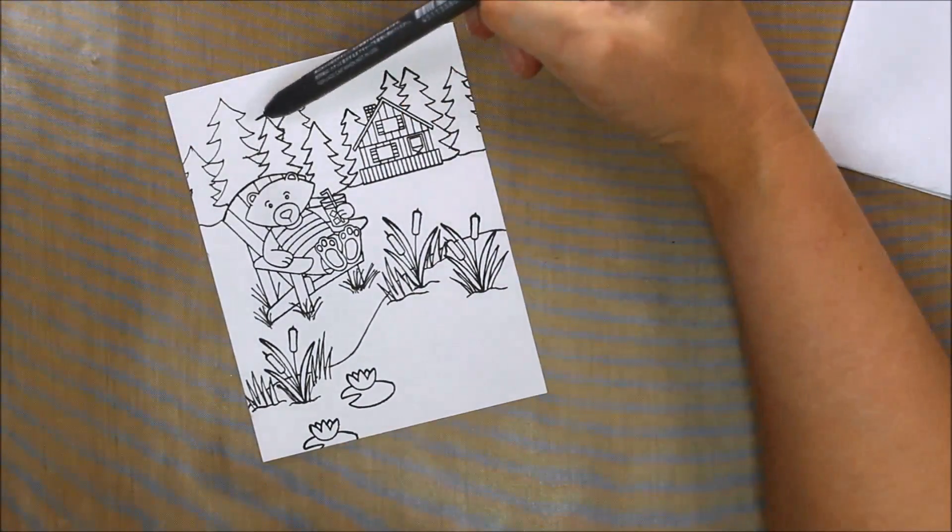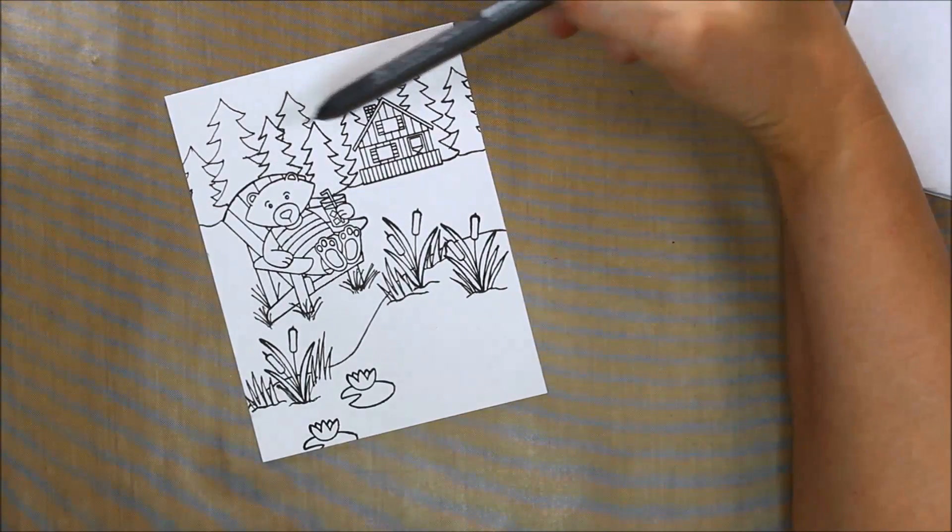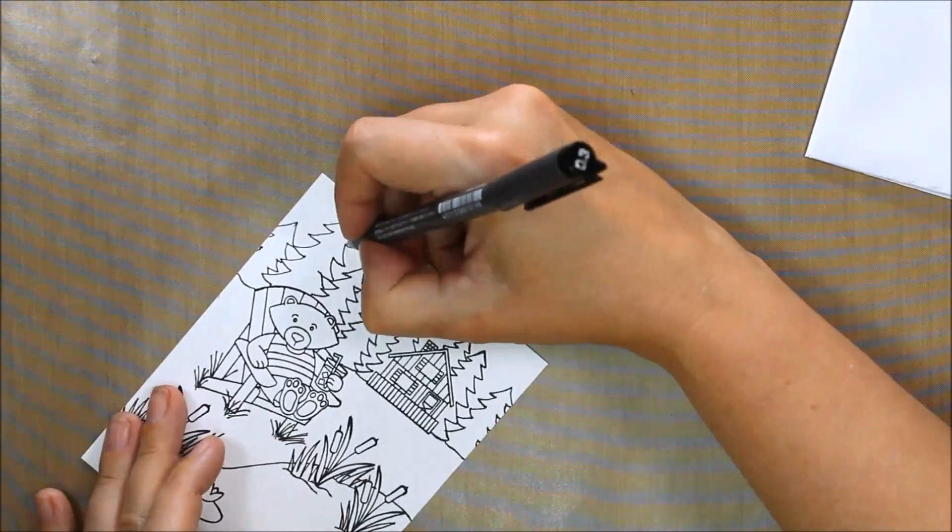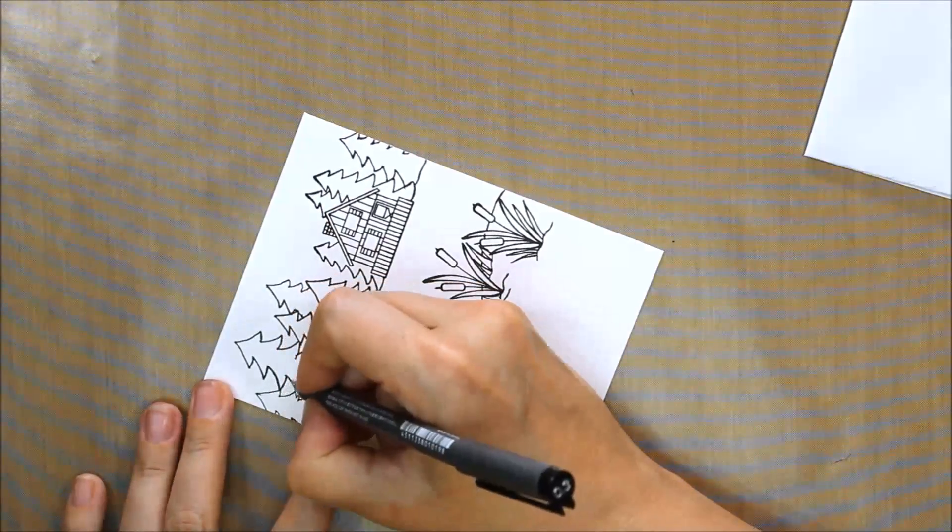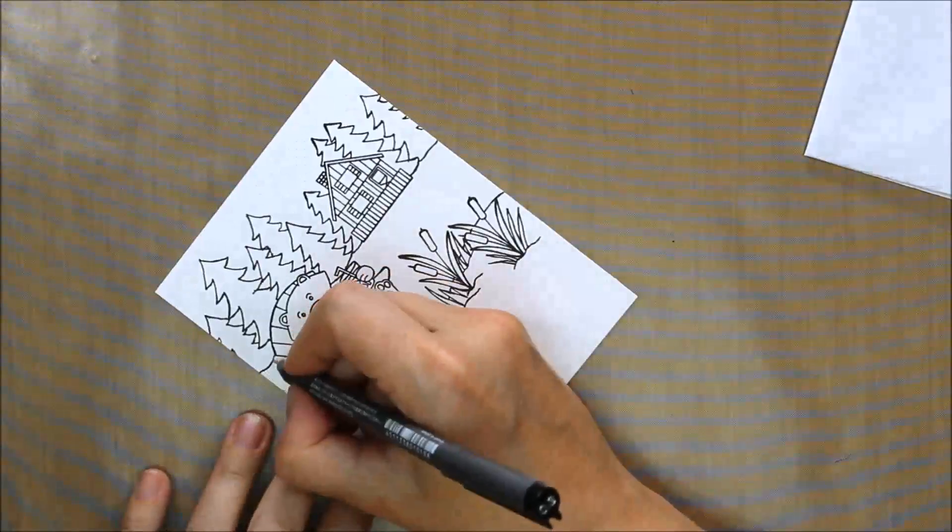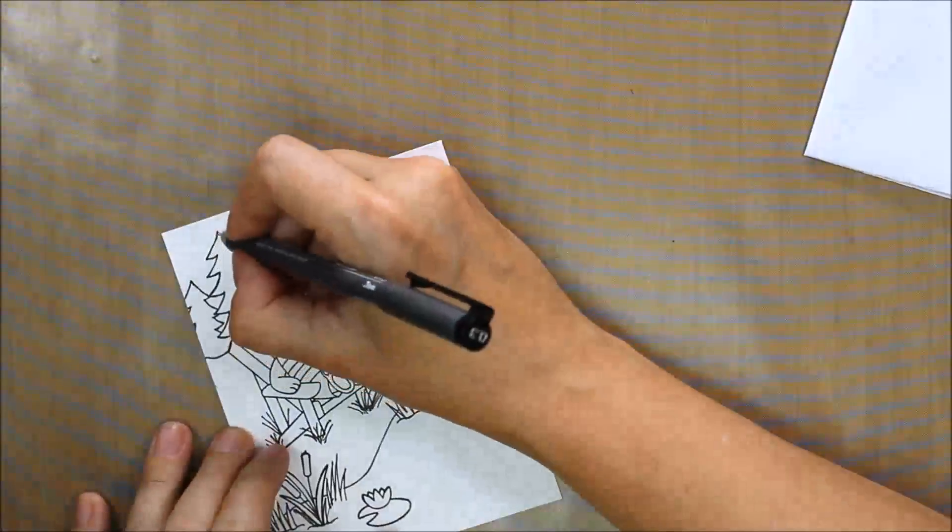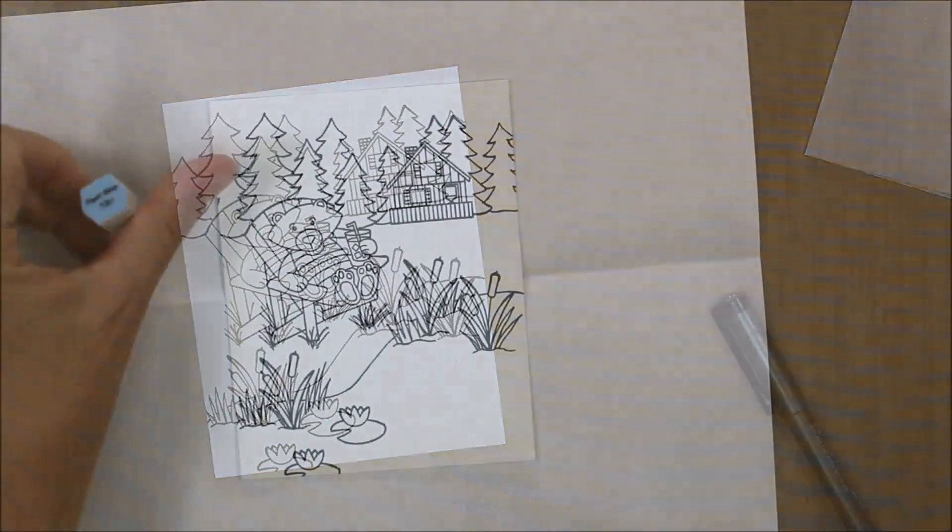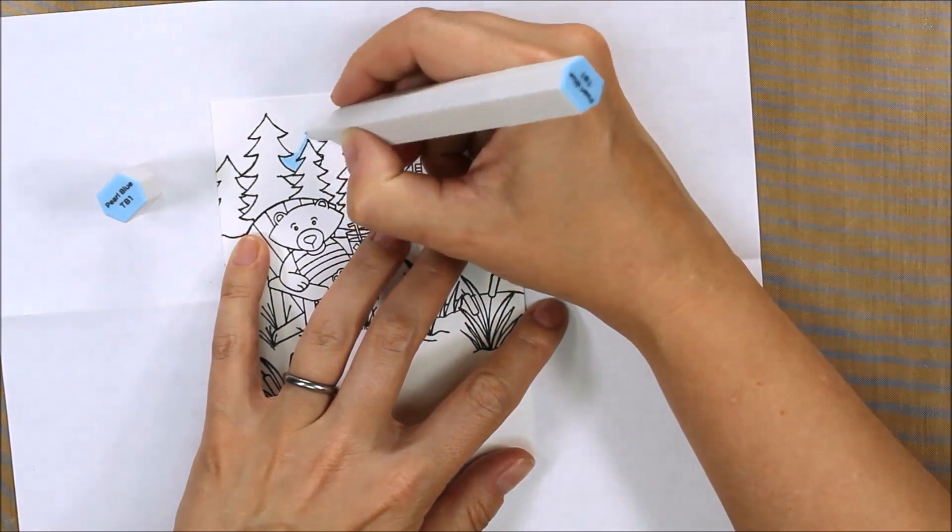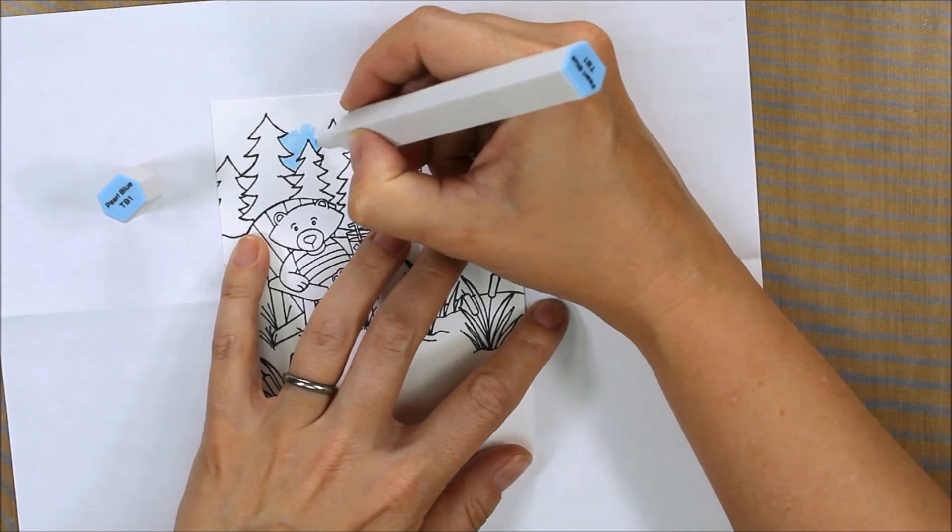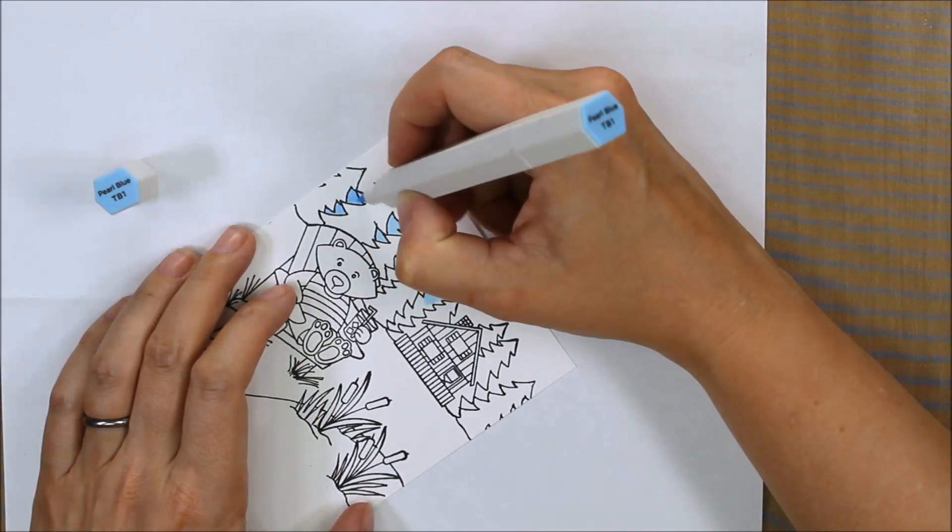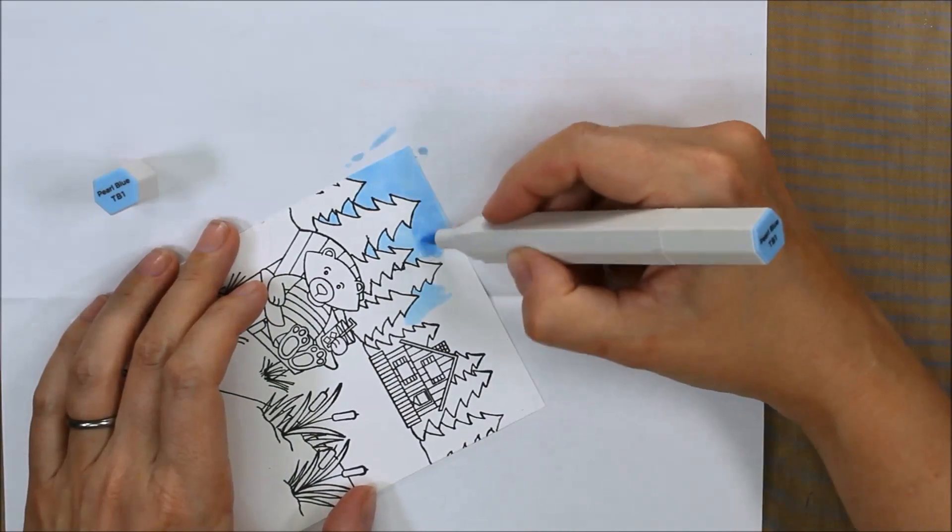I lined it all with my Copic liner in .03 but these last two trees I've only gone over once whereas everything else I've gone over twice. I'm gonna go over these last two trees again to thicken up the line. That's important because you want to mimic the line weight of the stamps you've stamped. Always start out with a pen that's either the same line weight or slightly lighter. You can always make the line weight thicker, you cannot make them thinner.